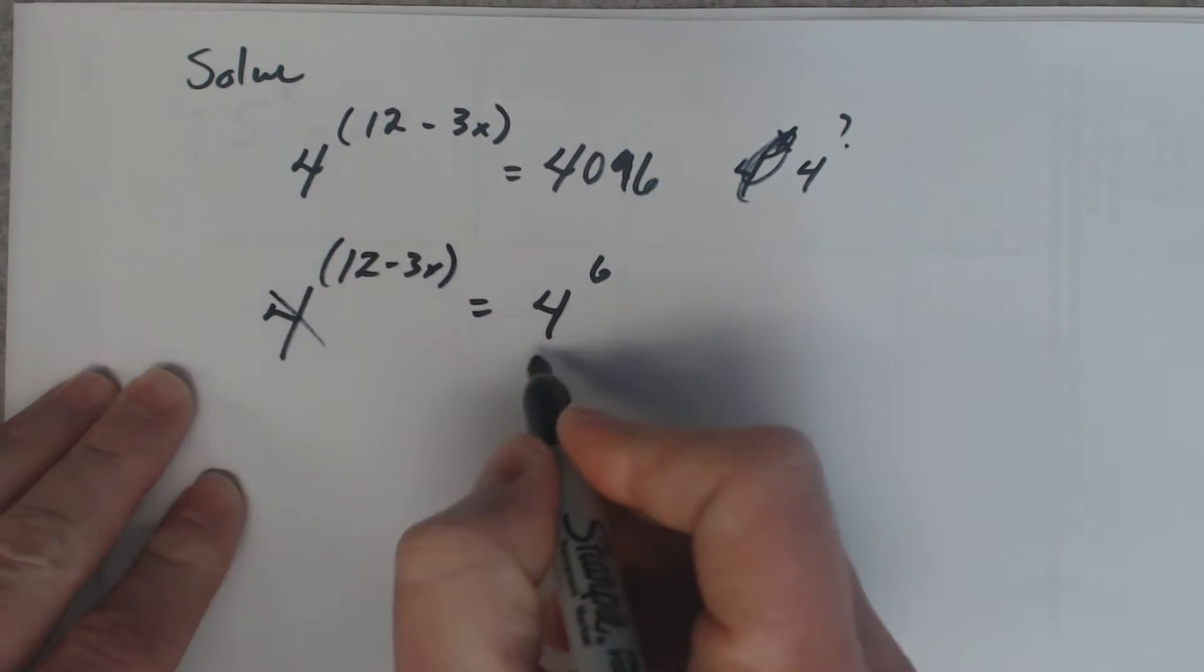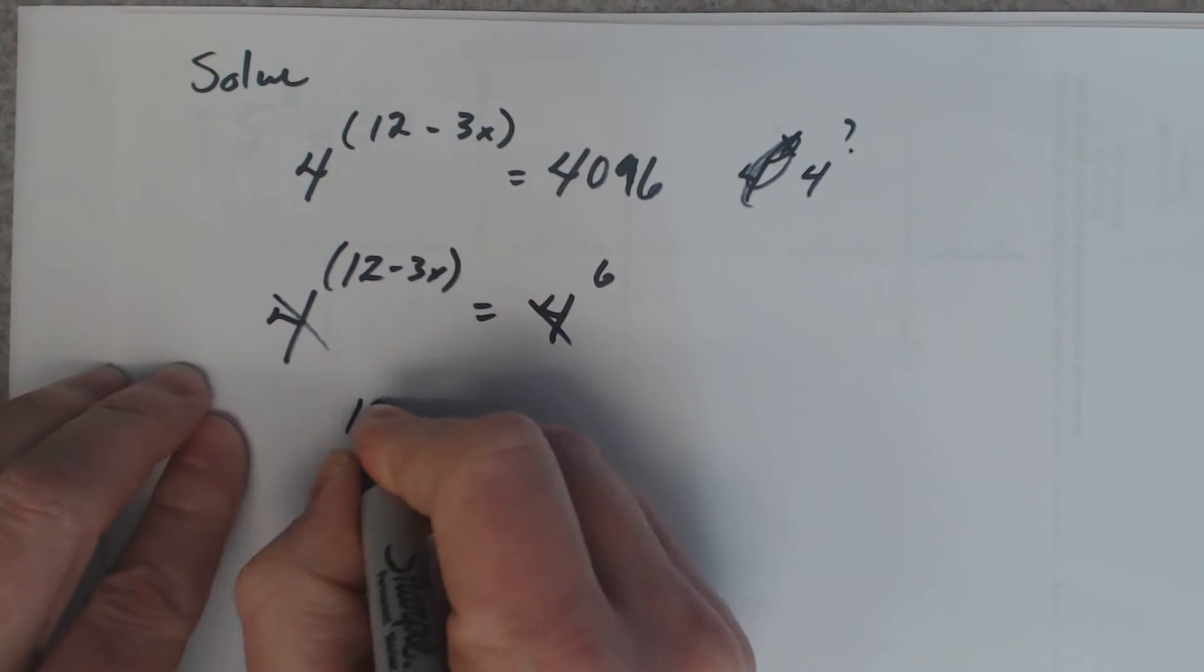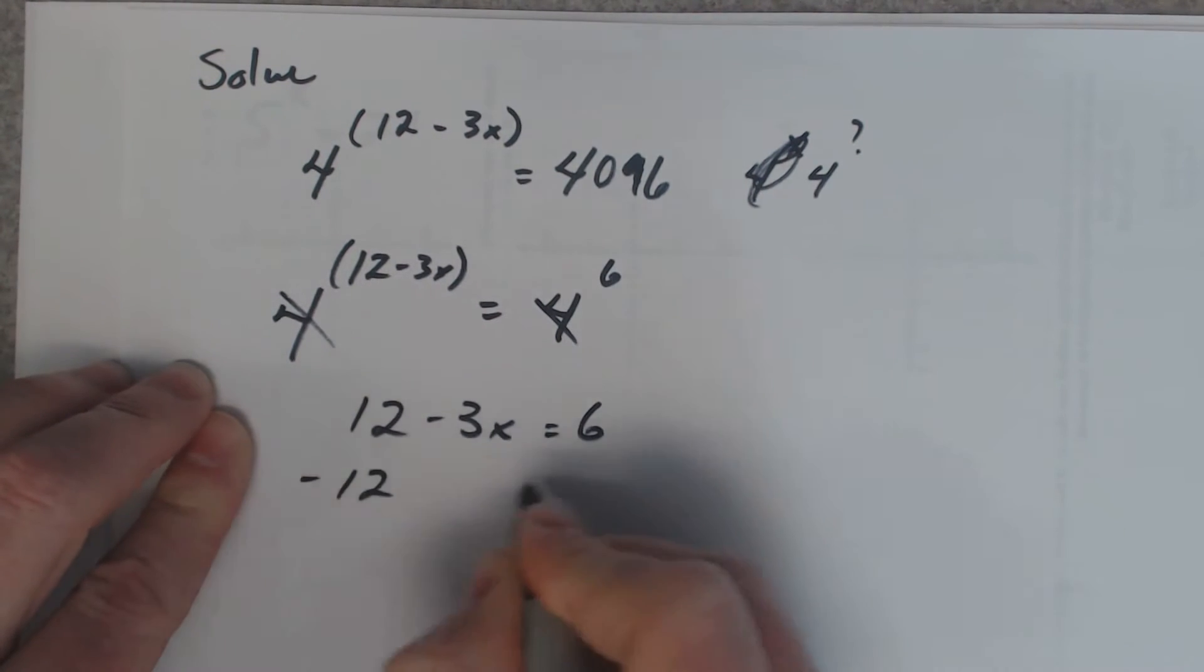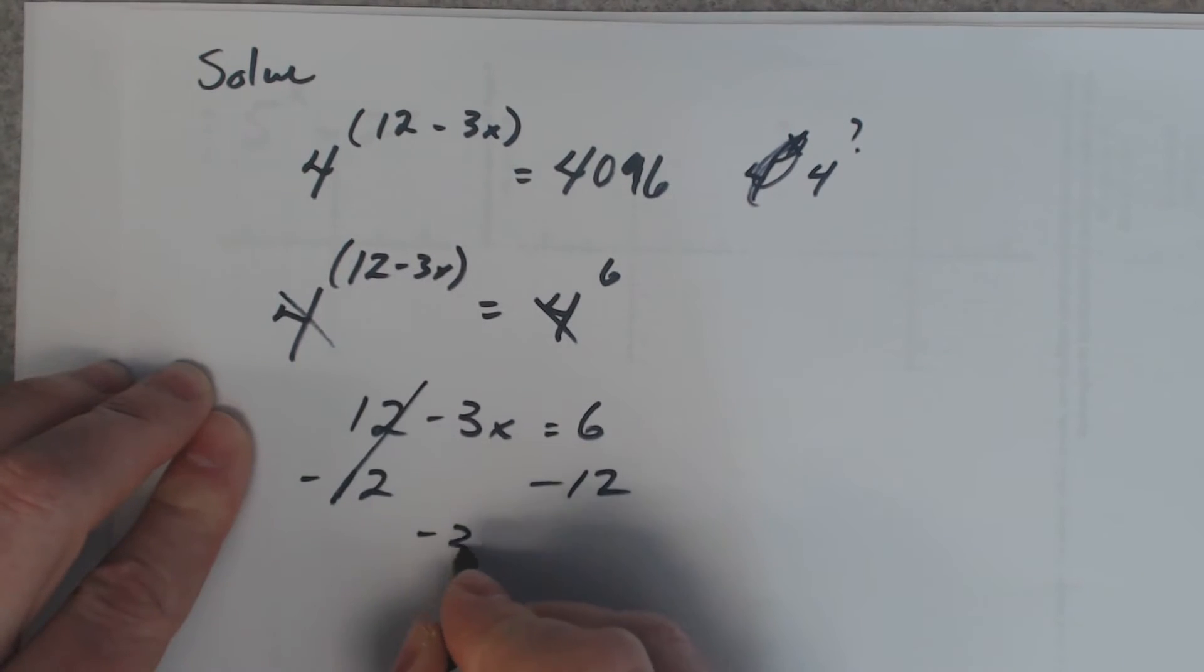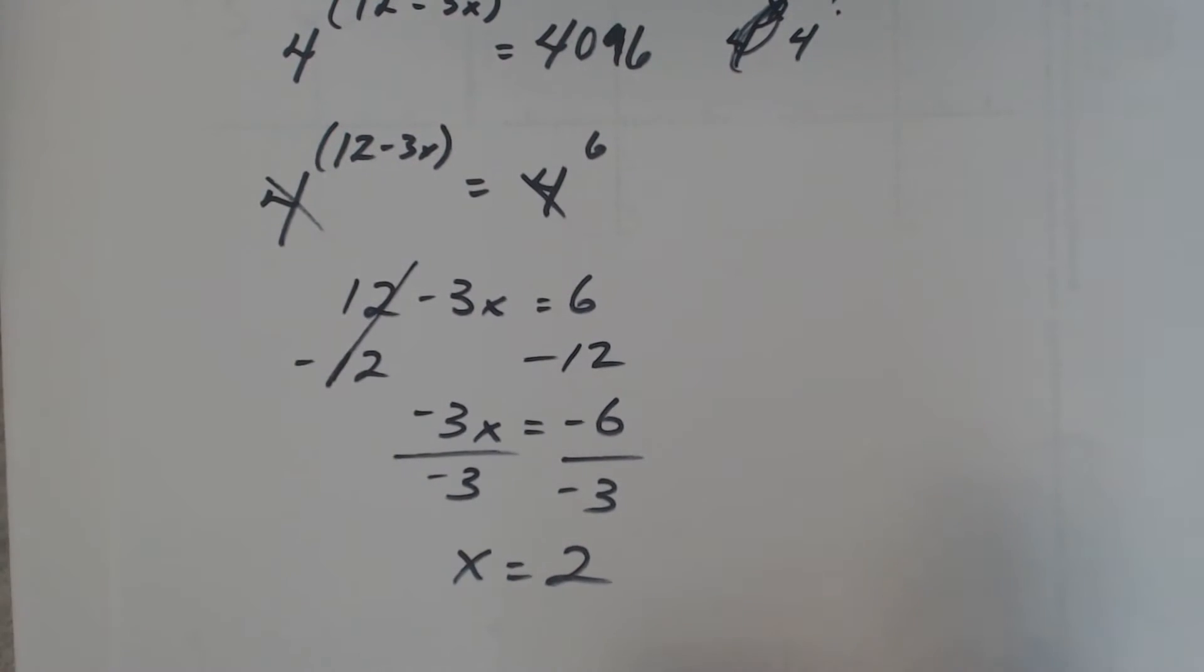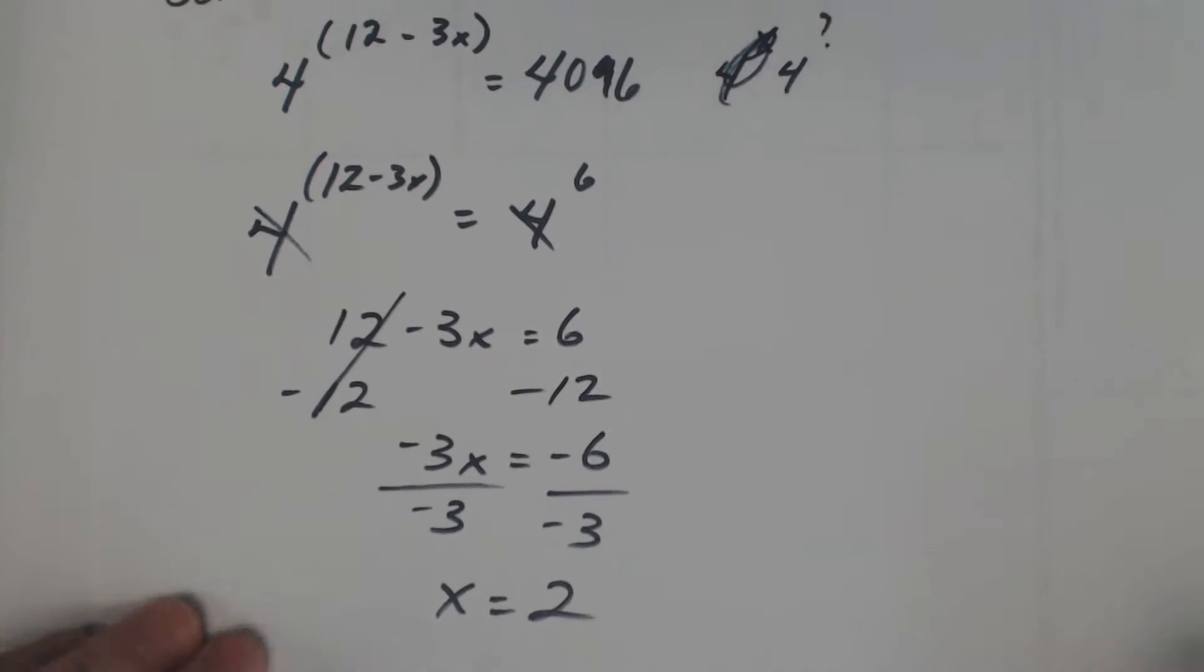Well, you've got the same bases. So, just set the powers equal. Take away twelve. Divide by negative three. Two. X is two. There you go.